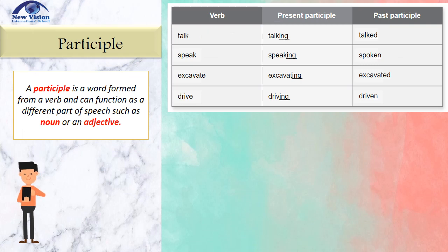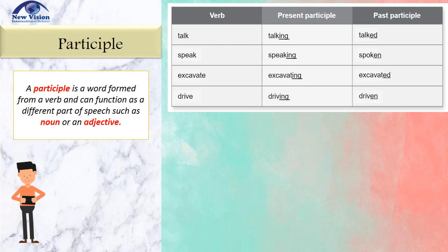Let us now move on to the lesson proper. A participle is a word formed from a verb and can function as a different part of speech, such as a noun or an adjective.